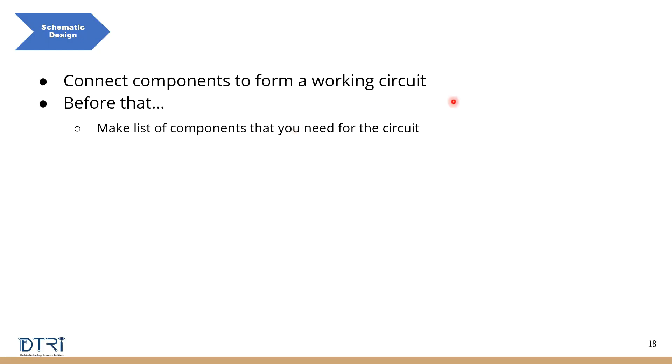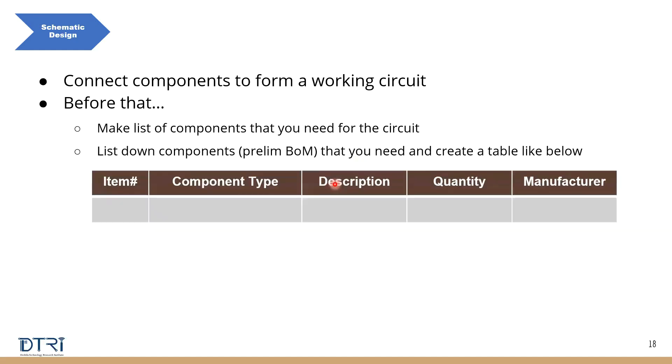First, you have to make a list of components that you need for the circuit. So we know that this is my system architecture. I need to know what are the different components that are required to build this system. So you list down the components. We call it as preliminary BOM. BOM is bill of materials. So you make a list of components and you put it in a table like this.